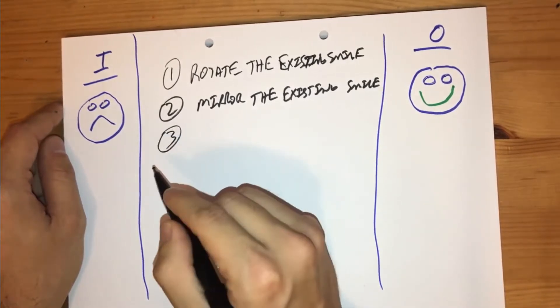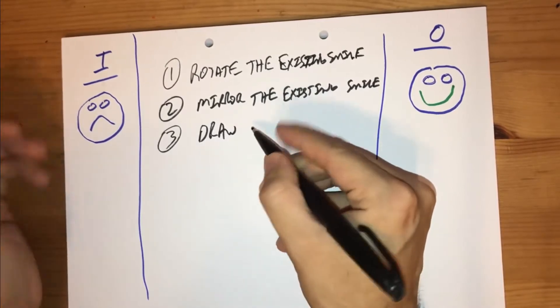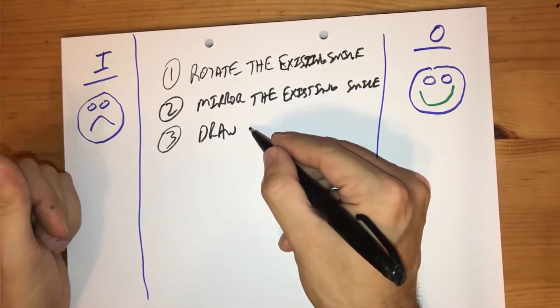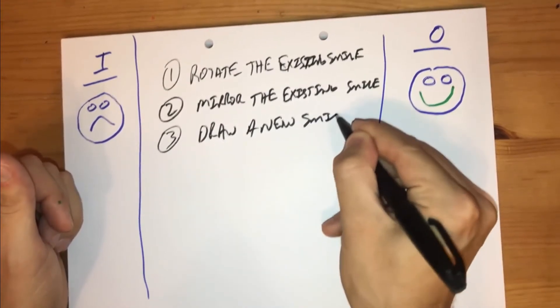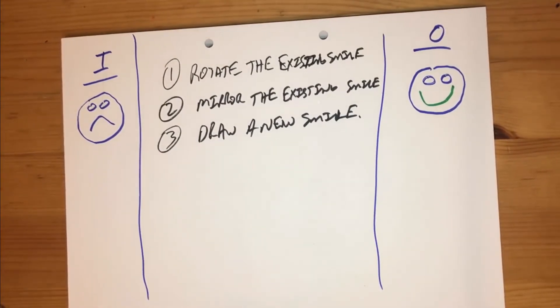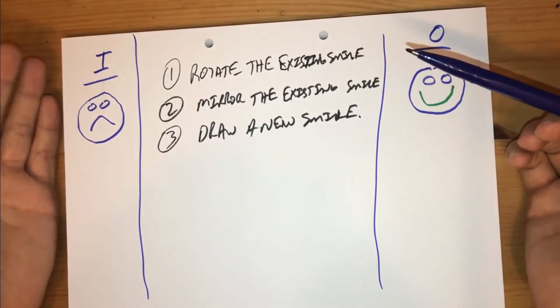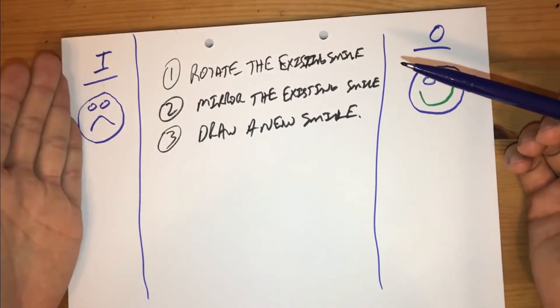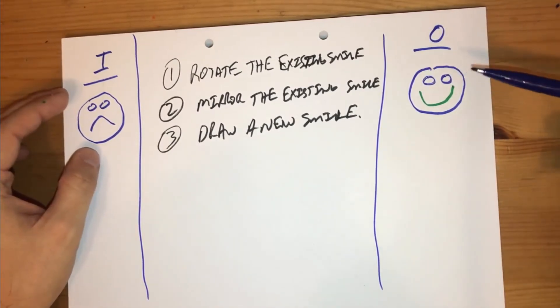And number three is, I guess you could just draw a new smile, draw a new smile for the face. So let's just say for right now, these are the three main techniques we could use on a very high level to make the input of what looks to be to you and me, a frowning face into a smiling face.